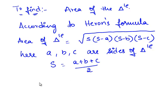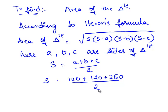So now let us find the semi-perimeter. S is equal to 120 plus 170 plus 250, divided by 2, which is equal to 540 divided by 2. Therefore, S is equal to 270 cm.